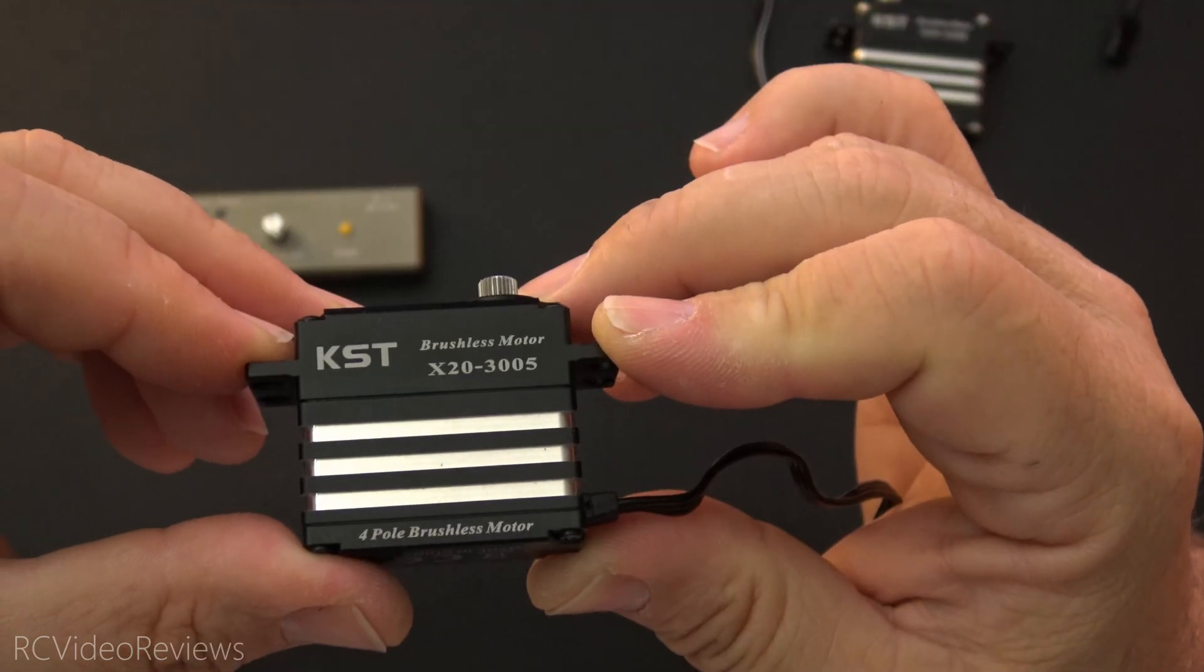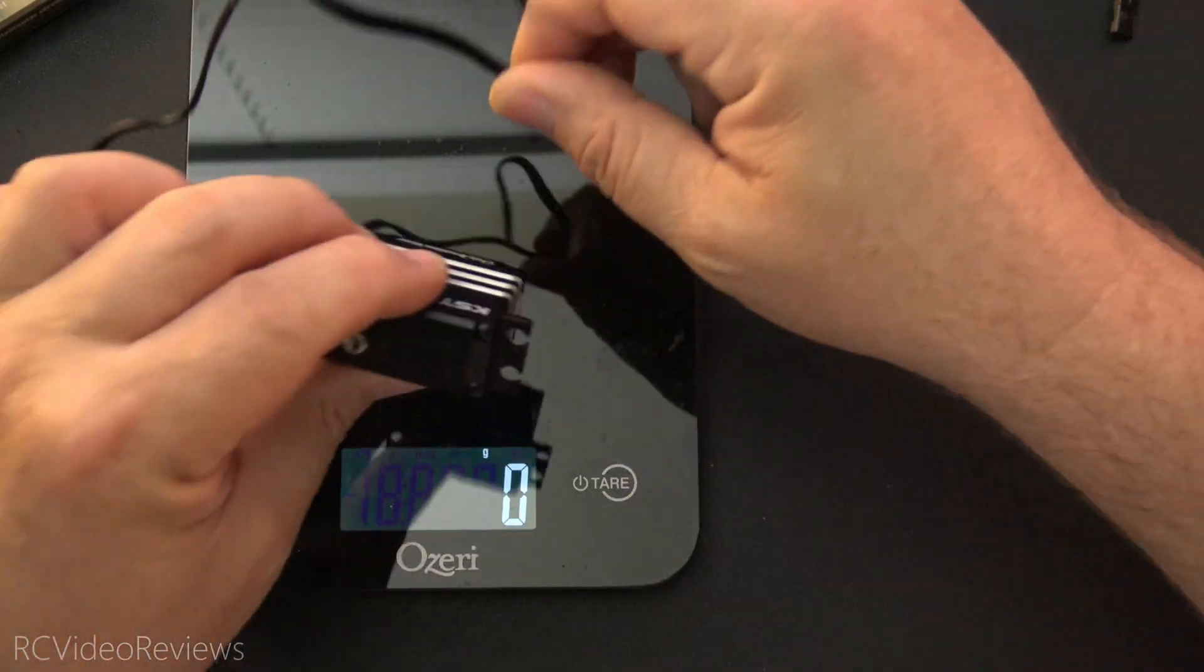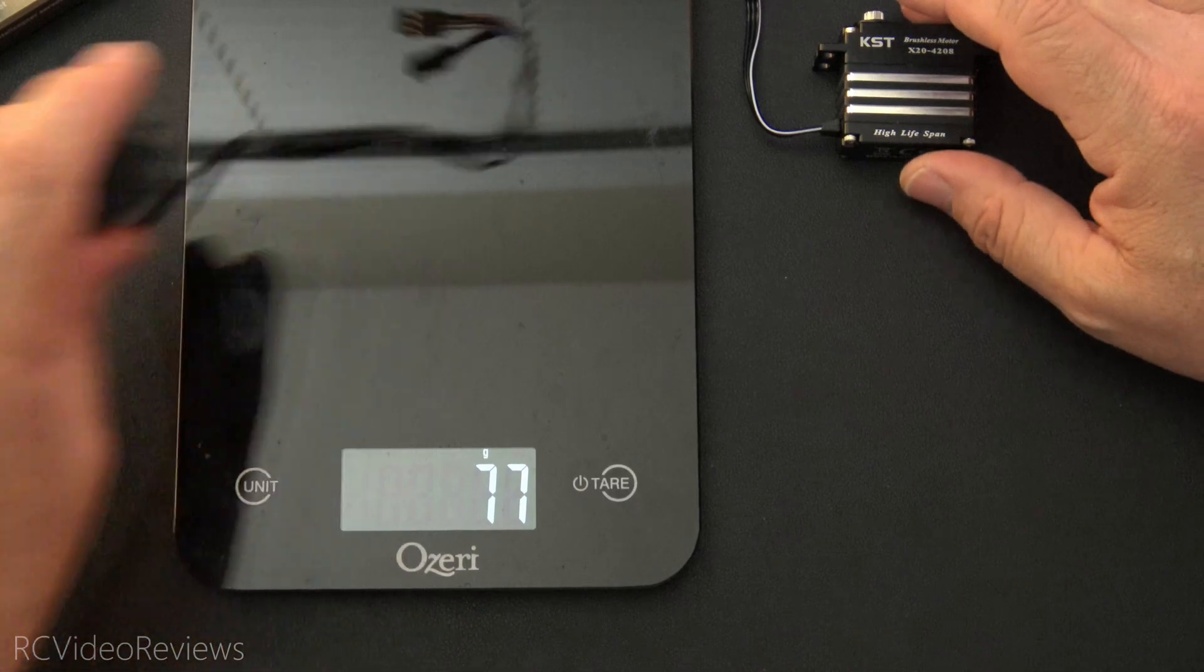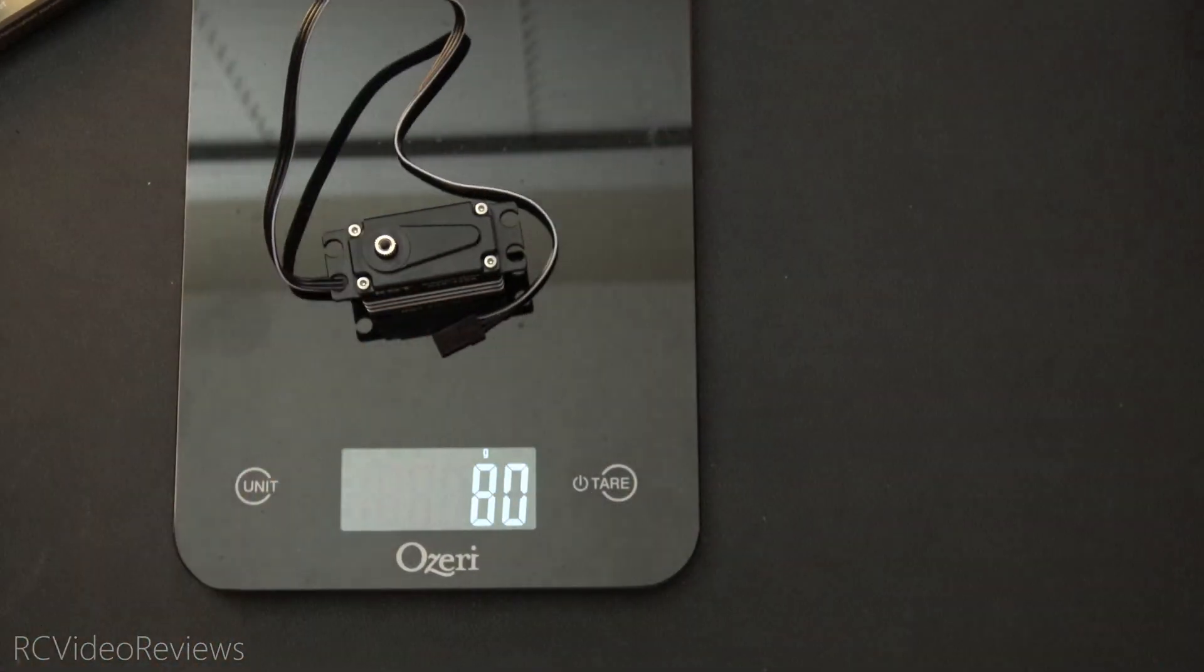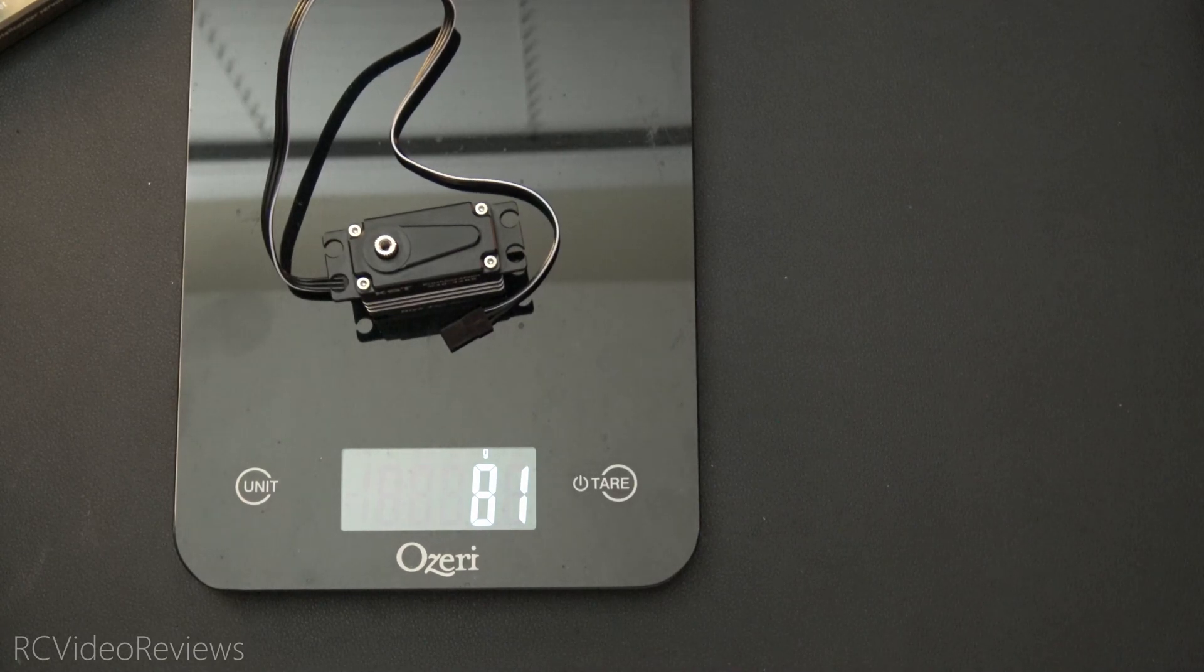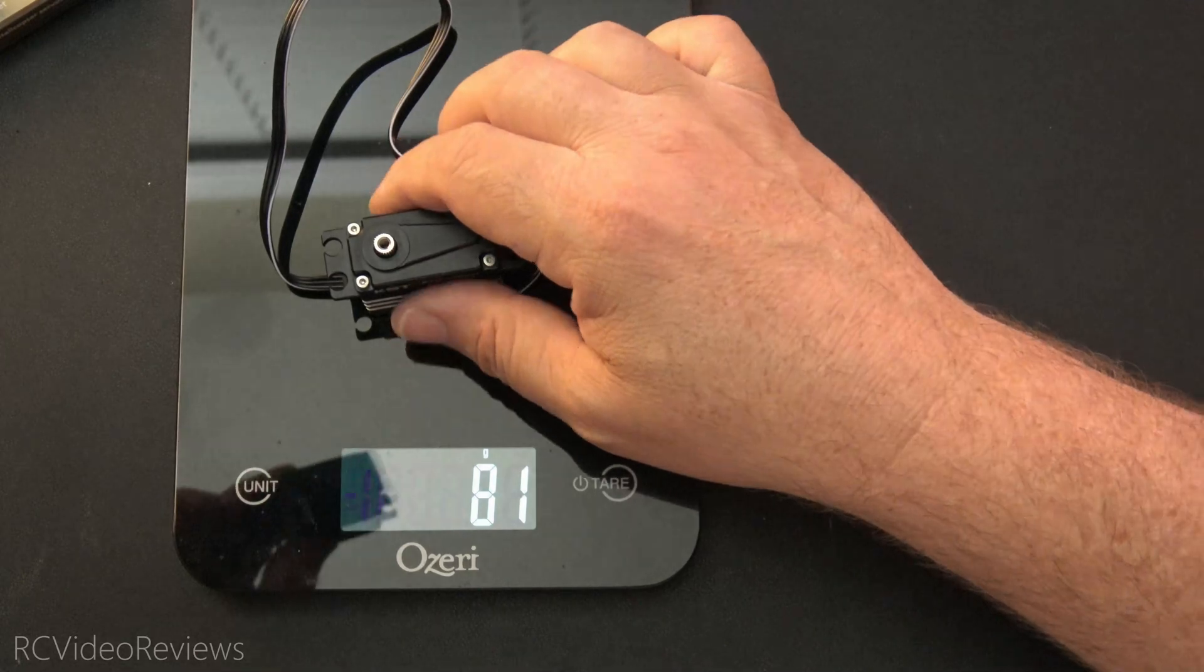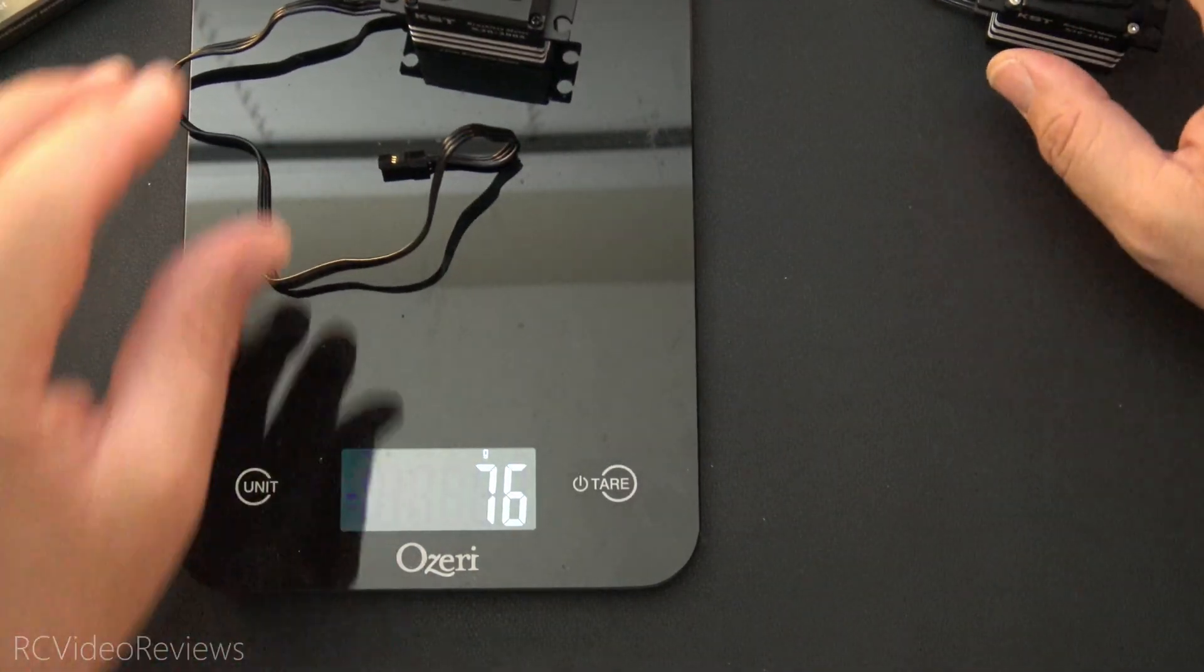These servos are also soft start and programmable, which is very cool. As far as weight goes, the book says 70 grams for the 3005s, but I'm showing 77, and the book says 80 grams for the 4208s, and I'm showing 80 grams on the button. So the 3005s are a little portly, even though they're a little smaller. There's only about a 4 gram difference between these two. The book says 10 grams, but I'm showing about 4 or 5.